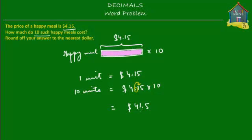So what you get is $41.5. And just because it's dollars and cents, we don't keep this as single digits. So we'll put it as two digits by placing a zero at the end. So 10 happy meals cost $41.50.